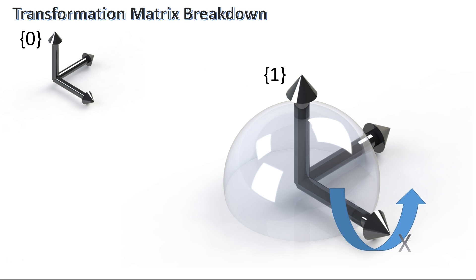In this case, I named the reference frame 0 and the object's frame 1. The difference between the object's frame and the reference frame is the transformation matrix. So whenever you see this type of notation, it can be read as the transformation of frame 1 with respect to frame 0.